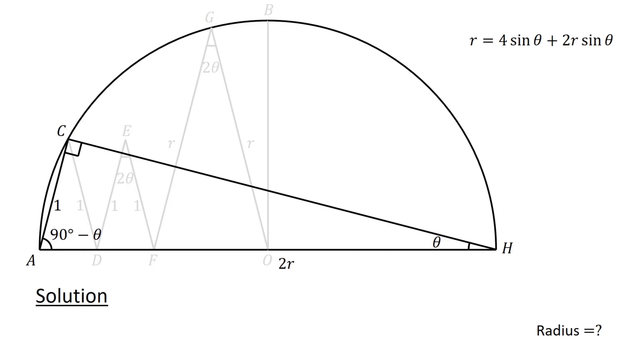In right triangle HCA, we therefore have sin theta equals AC over AH, or 1 over 2 R.